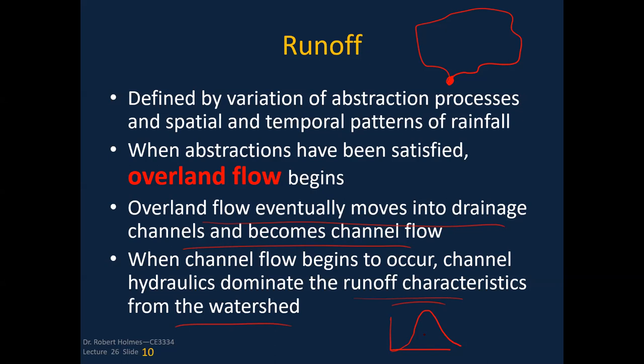Overland flow eventually moves into drainage channels and becomes channel flow. The shape of the hydrograph on a particular watershed is controlled by the variations in hillslope, how the watershed extracts and infiltrates water, the shape of the channels, how rough they are, and how fast they convey water to the outlet.